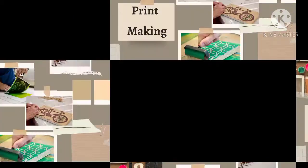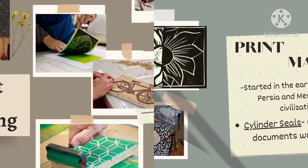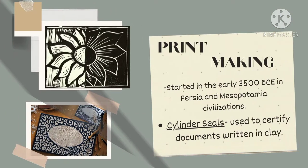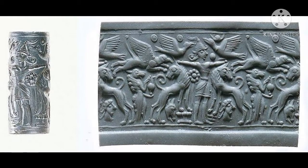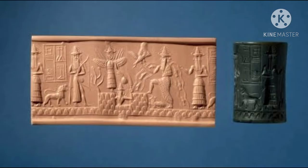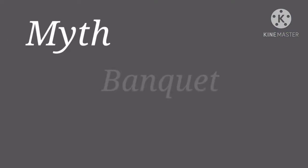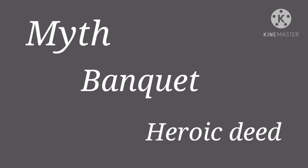The next topic is all about printmaking. Printmaking was started in the early 3500 BCE in Persian and Mesopotamian civilizations. In this topic, cylinder seals were used to certify documents written in clay. Cylinder seals are a delicate work of art carved with tiny figures of gods, beasts, and men, usually relating to banquets or heroic deeds.